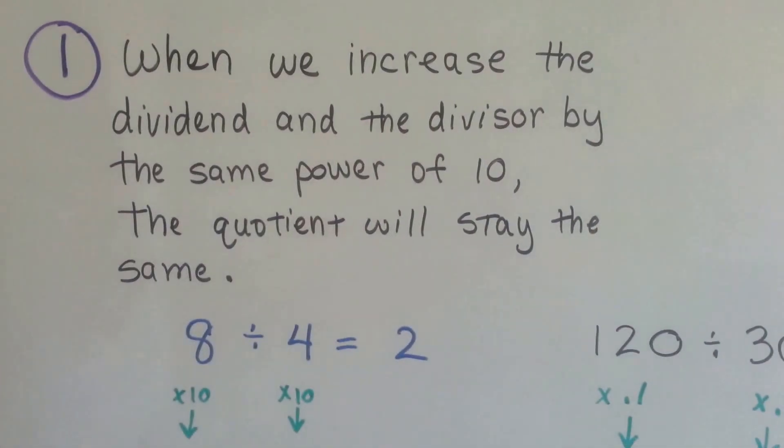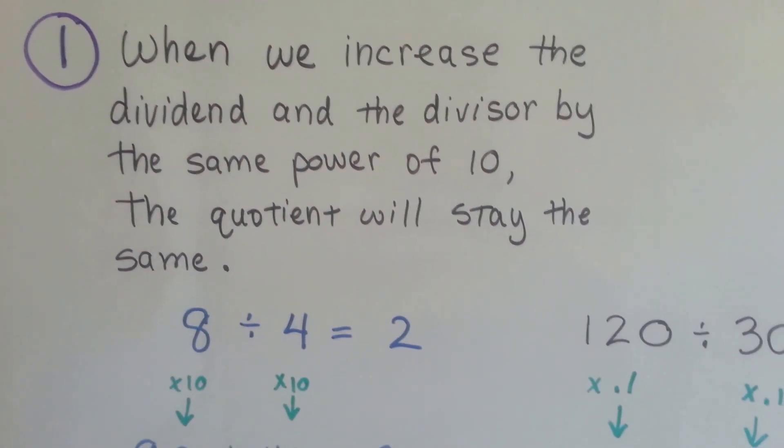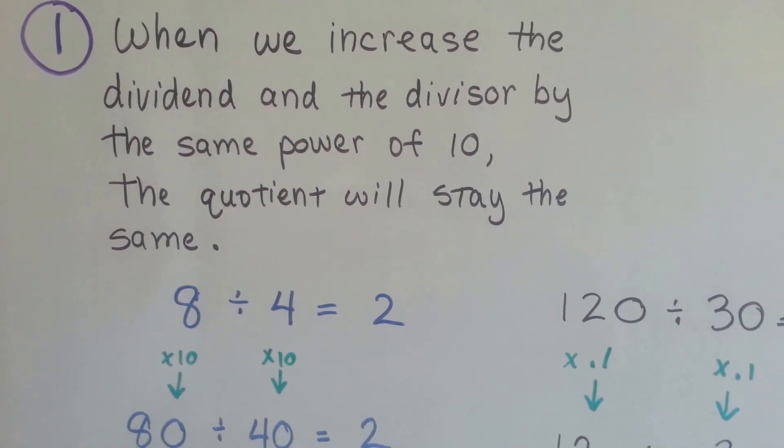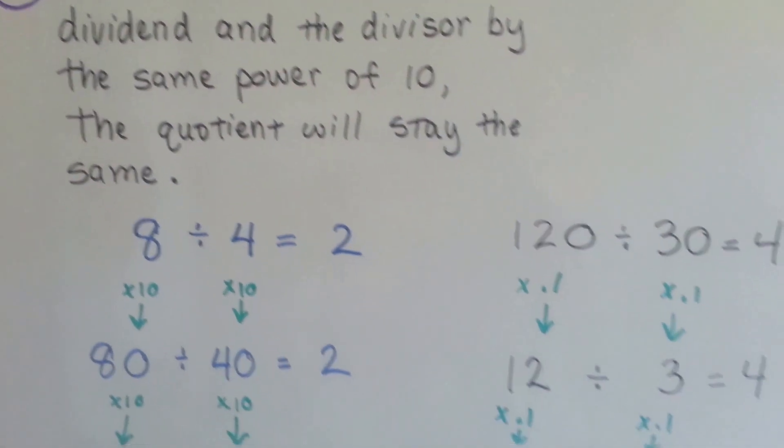When we increase the dividend and the divisor by the same power of 10, the quotient will stay the same. Take a look at these.